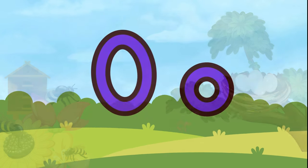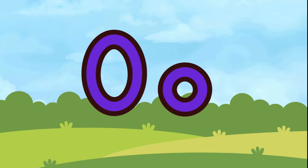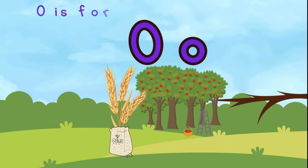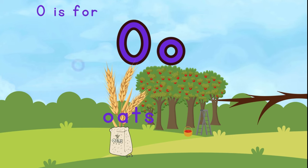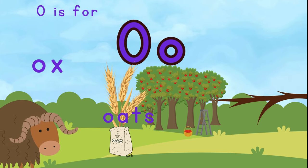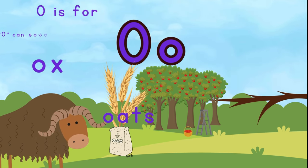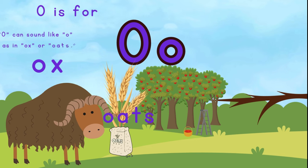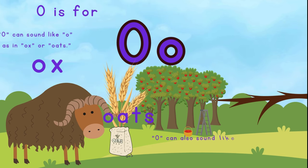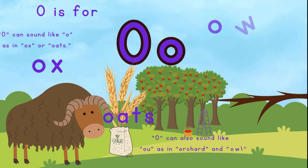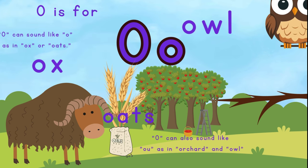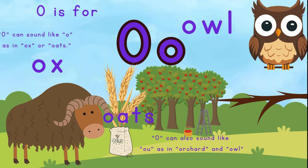This is the letter O. O is for oats. O is for ox. O can sound like O as in ox or oats. O can also sound like OU as in orchard and owl. O is for owl. And O is for orchard.